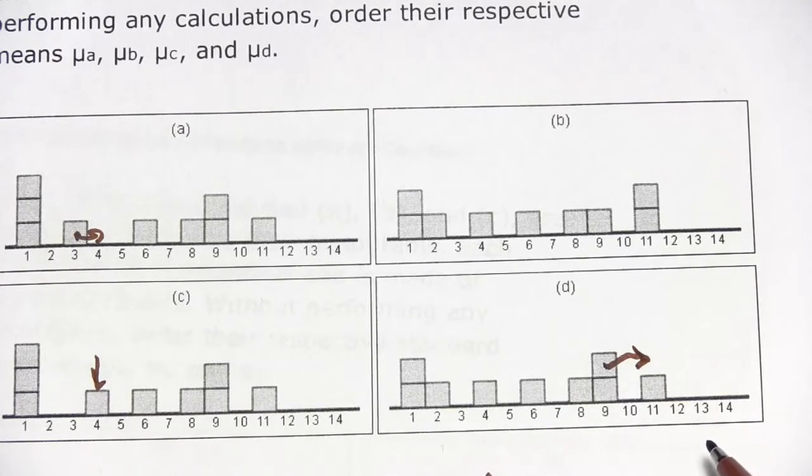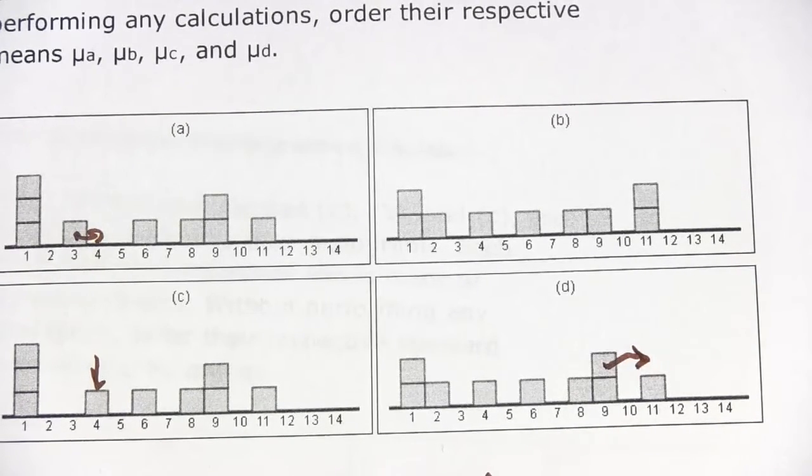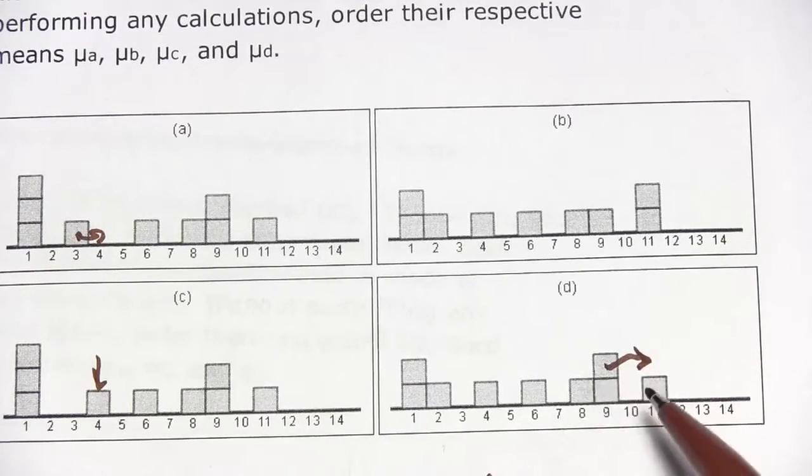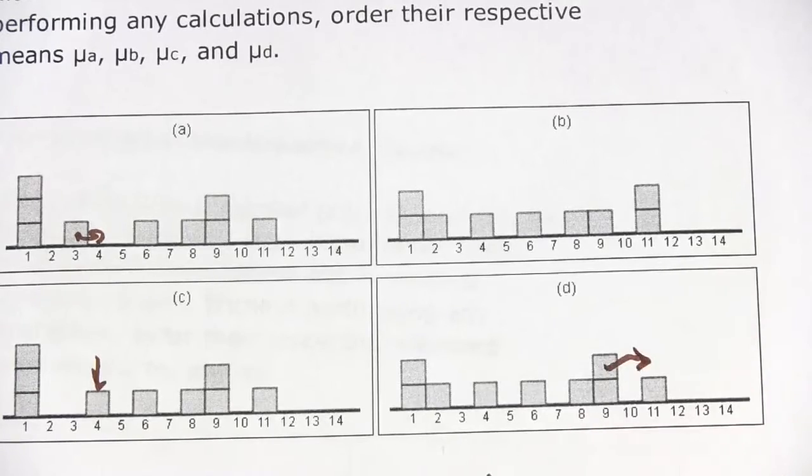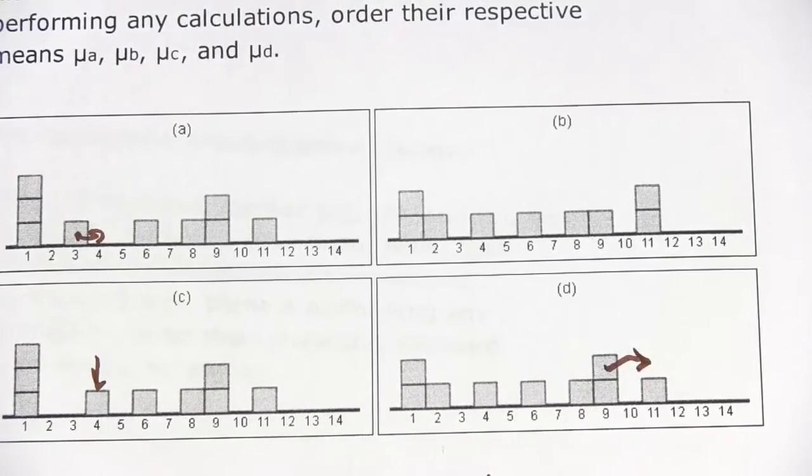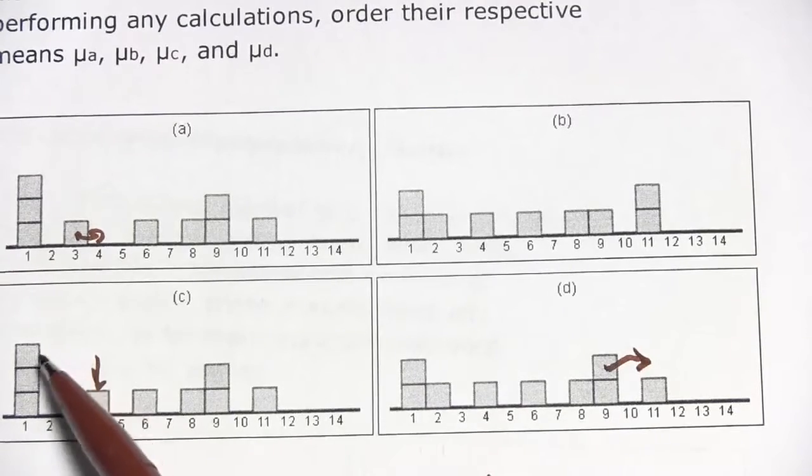We've got to relate b or d to one of these other ones to get a full accounting here. Let's look at d compared to c. Those two also look nearly the same. The only difference is you take this block and move it down here to a two.